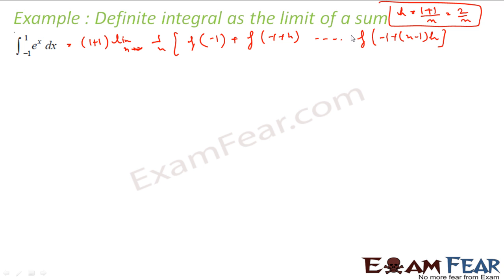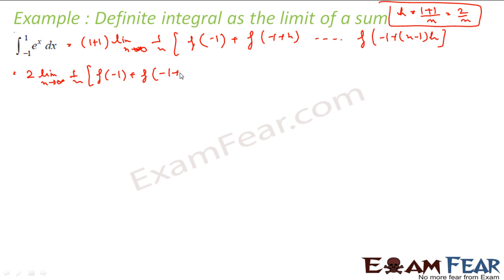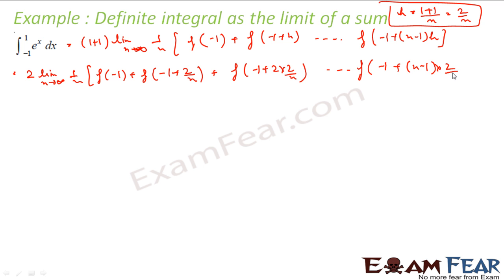So let us convert everything into n form, because here n tends to infinity. So this becomes 2 into limit n tends to infinity, 1 by n, into f of minus 1, plus f of minus 1 plus 2 by n, plus f of minus 1 plus 2 times 2 by n, and so on, up to f of minus 1 plus n minus 1 times 2 by n.